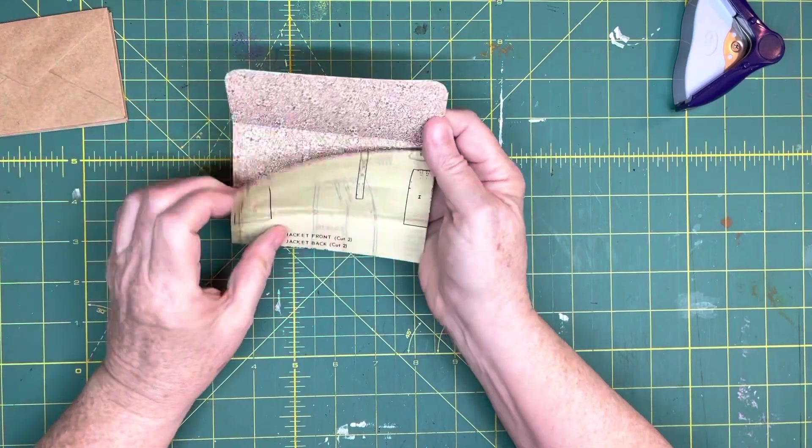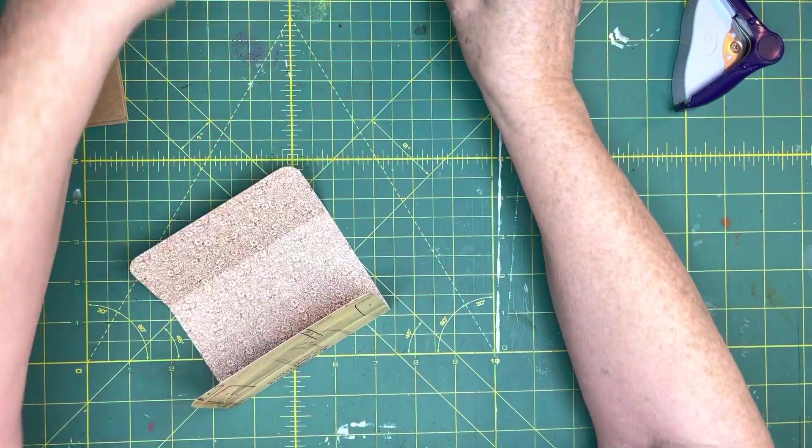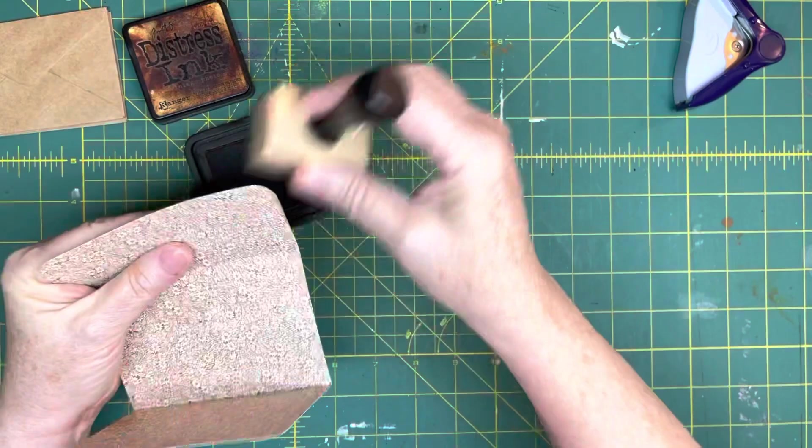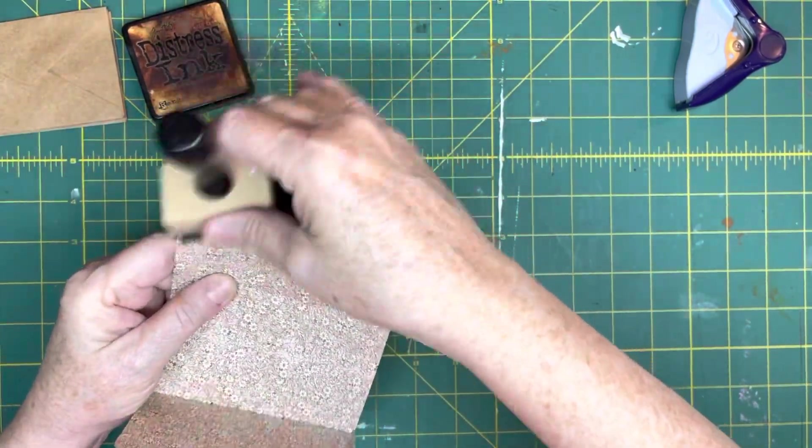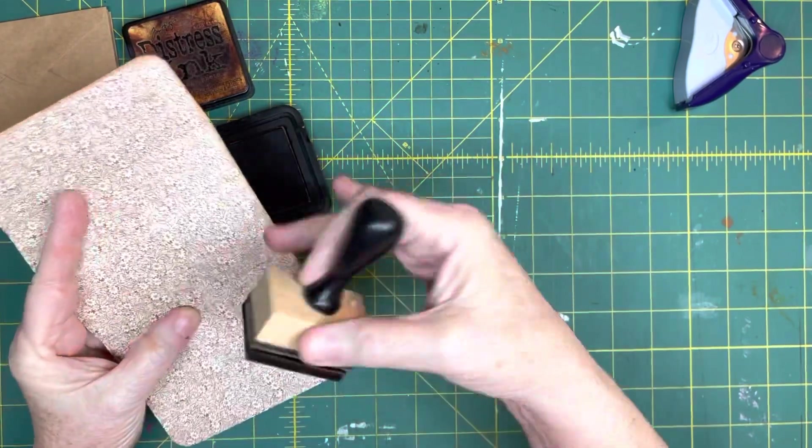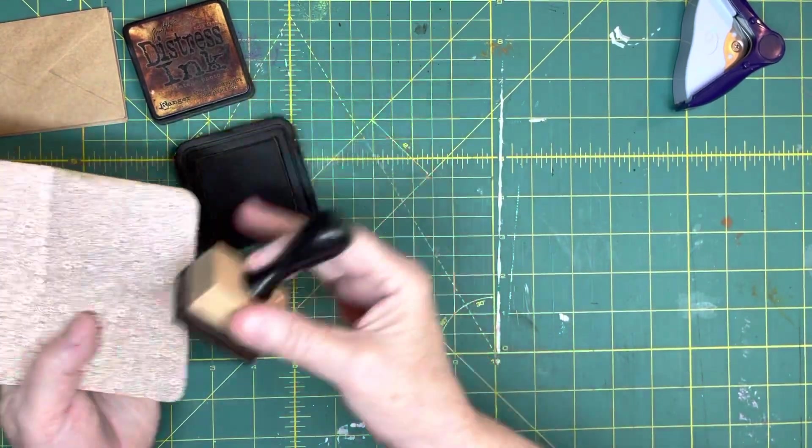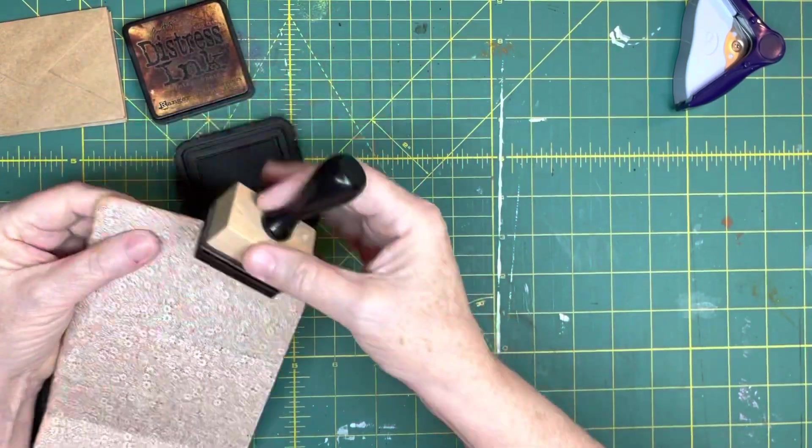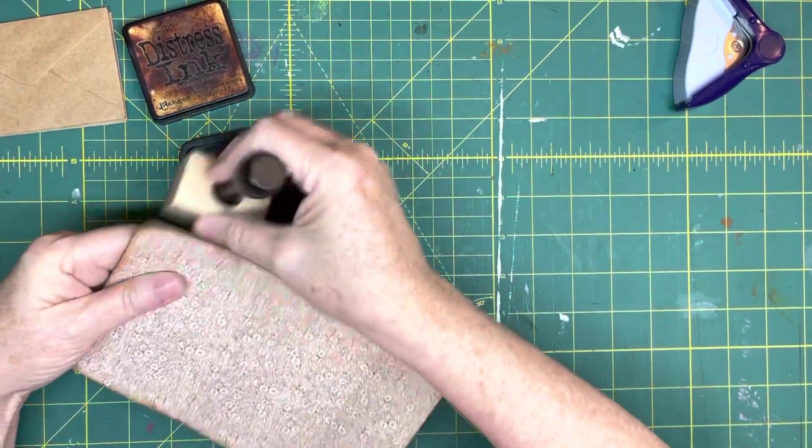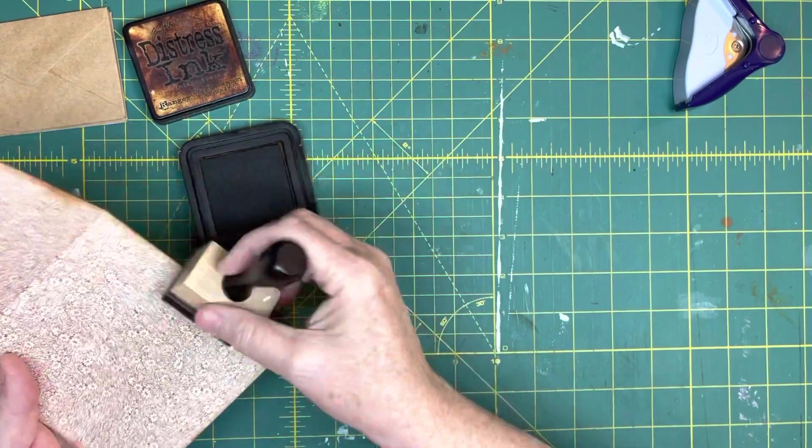Now before we glue everything together, the envelopes insert those and glue those, I like to ink things up a bit. So I'm going to go ahead and pull out my vintage photo. If you're going to ink the inside, now is the time to do it. I like to ink it because when I open it up to put something in it, I know that it looks a little bit more distressed. Now I got a little bit of ink there, am I worried about it? Nope. Because you know, you guys know me, if you've been following me, me and perfection we don't get along. It's good enough. I'm good enough, you're good enough, never forget it. That's my philosophy lesson for the day.